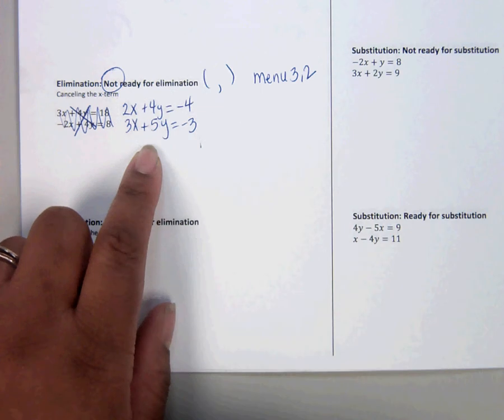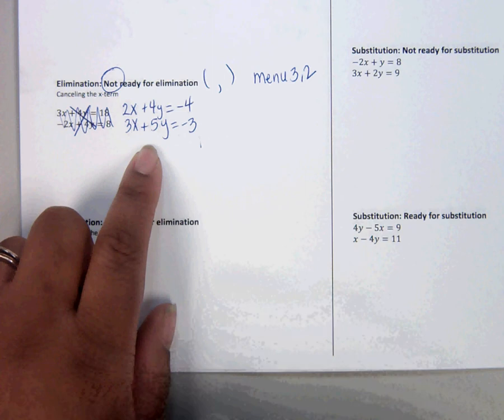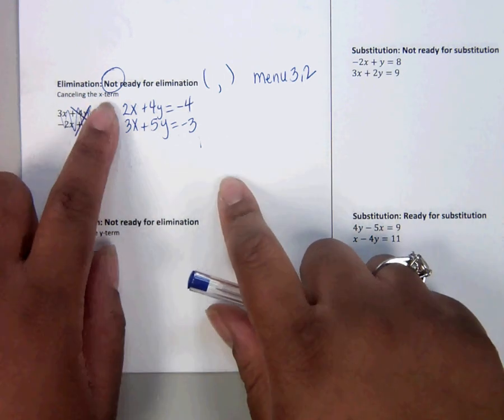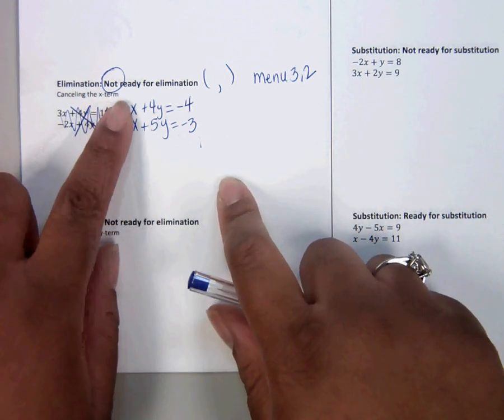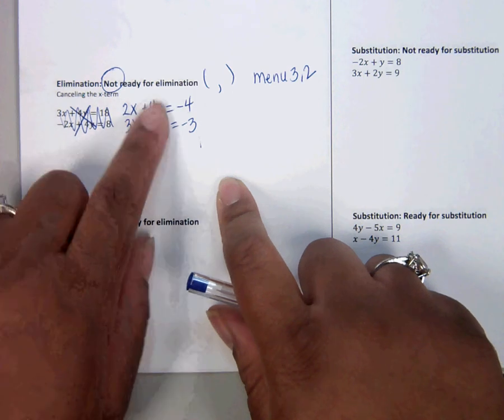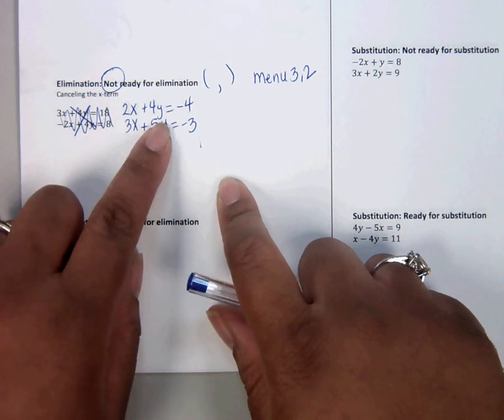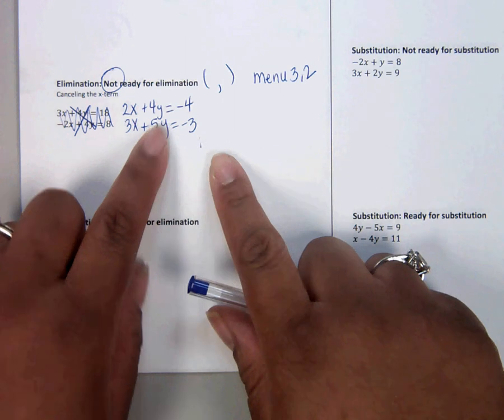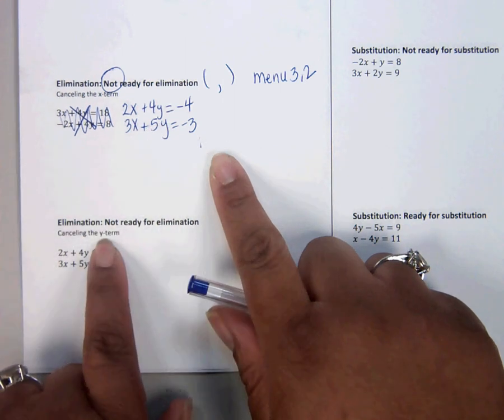So what do we do? We try to figure out which term we want to get rid of. Well, I decided for this one that I want to do the x's. If you want to do the y's, you can, but follow along with me on this example. We're going to do the y term on the next example.